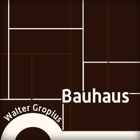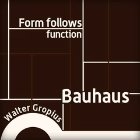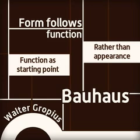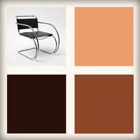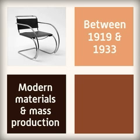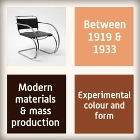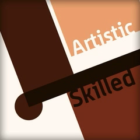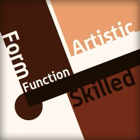Bauhaus was a school of art and design founded by Walter Gropius with the motto of form follows function. Products should be designed with their function as the starting point rather than their appearance. Furniture in this style used chrome tubing and black leather. Between 1919 and 1933, Bauhaus designers used modern materials and mass production methods, as well as experimental work using colour and form. Designers were encouraged to be artistic and skilled while following the principle that form should follow function.